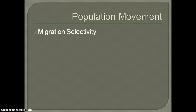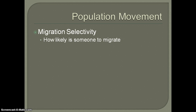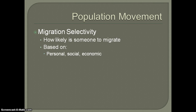When we talk about the movement of people, there's what we call migration selectivity. What we're referring to is how likely someone is to migrate. Migration selectivity is going to be based on a couple of specific things: the personal attributes of an individual, the social position that the person finds themselves in, and also their economic status.